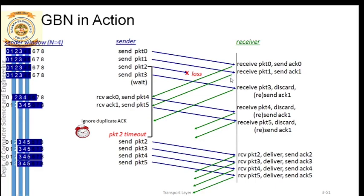What is cumulative acknowledgement? Instead of sending acknowledgement for every packet, the receiver sends the acknowledgement for the last correctly received packet. If the last correctly received packet is received properly, then the receiver will send one acknowledgement which serves as a cumulative acknowledgement for all correctly received packets at the receiver's side.